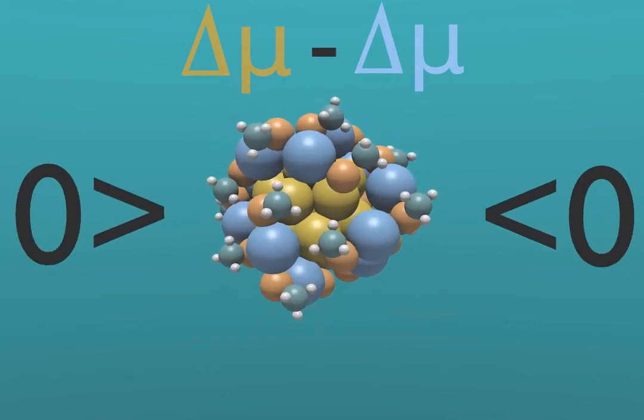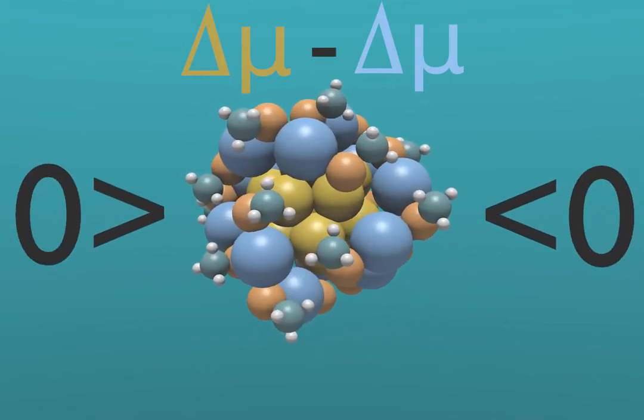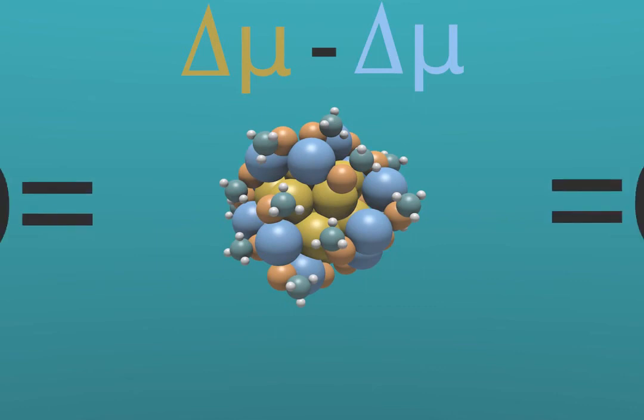An imbalance in chemical potential would favor rearrangement, while a perfect balance results in a stable cluster.